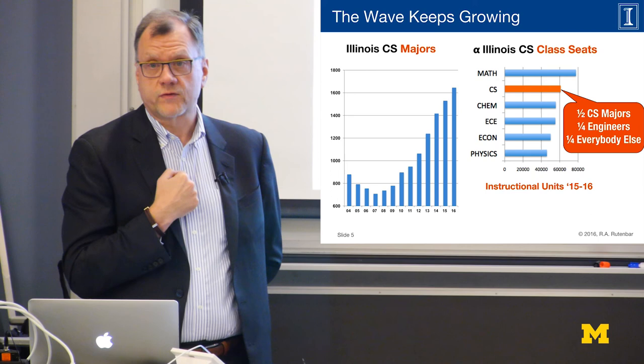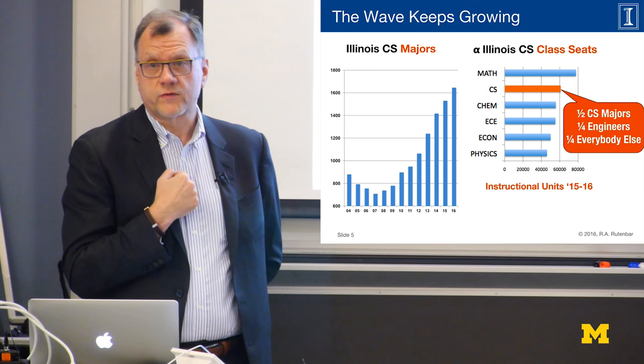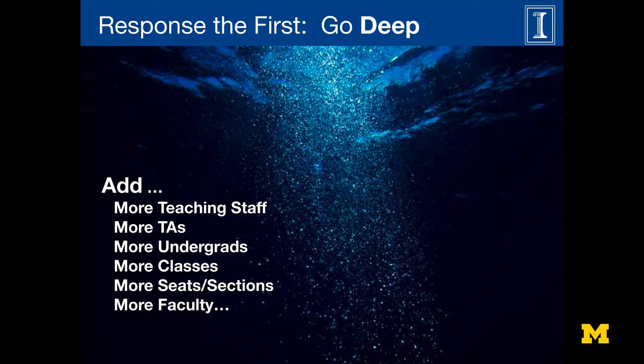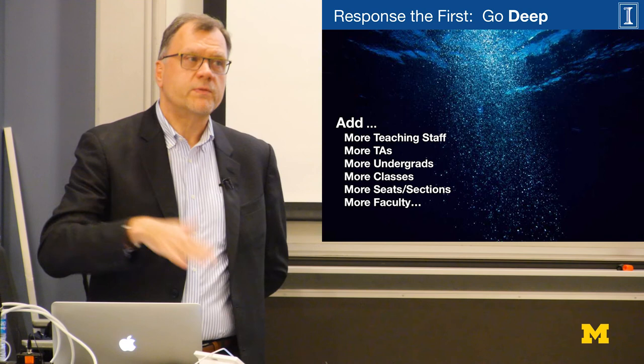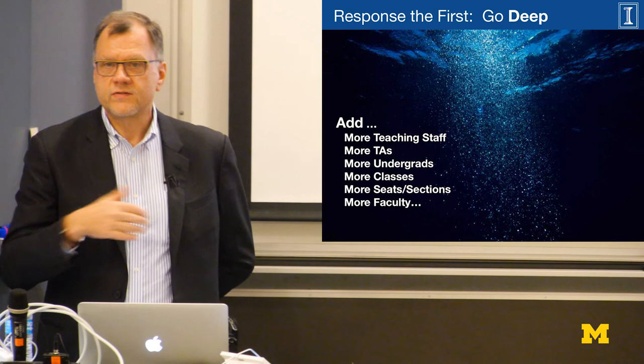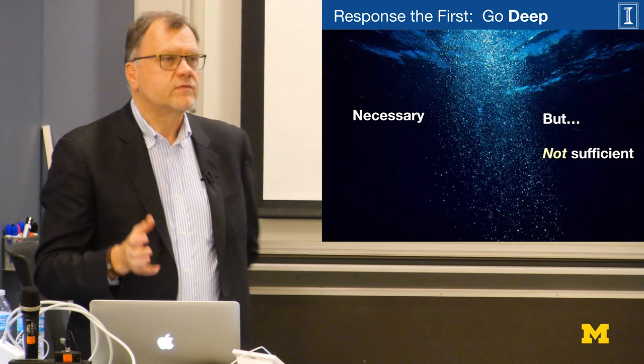Of those units, about half are CS majors who will get a CS degree, a quarter are the rest of the engineering college, and a quarter are everybody else — which makes things very interesting. The first response at the department, college, and institution level is what I call the deep response: you go deep — add more depth in teaching staff, more TAs, more classes, more seats, more sections, and more faculty. That's a good and necessary first response, but it's not sufficient.